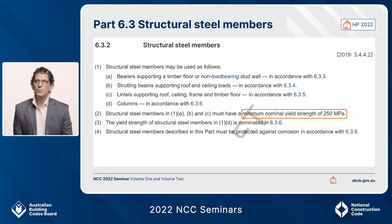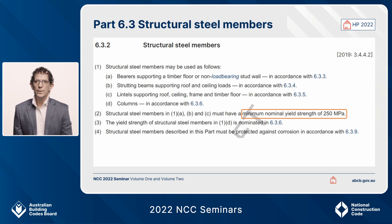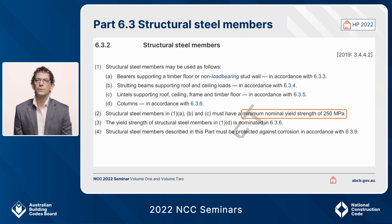In Part 6.3 of the housing provisions, there's one important thing to note: in 6.3.2 sub-clause 2, there is a requirement for structural steel members to have a minimum nominal yield strength of 250 MPa. Structural standards require a minimum yield strength of steel, and in particular in Australia we want to make sure the best quality steel is being used. So we've spelt out clearly in the housing provisions a minimum yield strength of 250 MPa for any of the structural steel members set out in 6.3.2, items 1a, b and c.